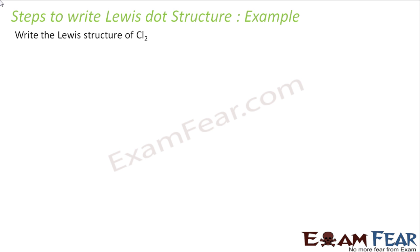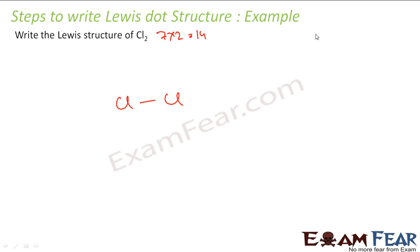Let's take the example of chlorine gas, Cl2. One chlorine has 7 valence electrons, and 2 times 7 gives 14 valence electrons. So let's write chlorine with a bond. I started with 14 valence electrons, used 2 electrons for the bond, and I am left with 12 electrons.